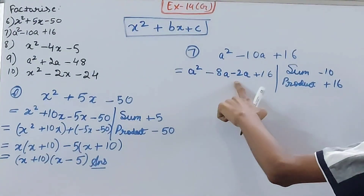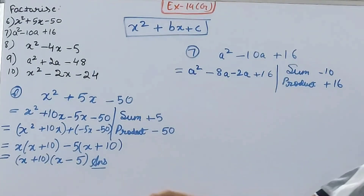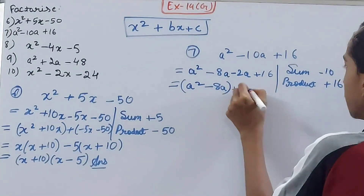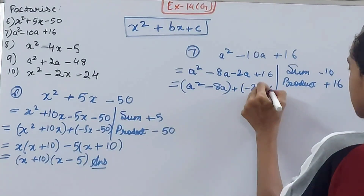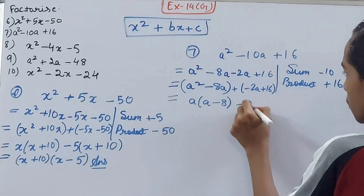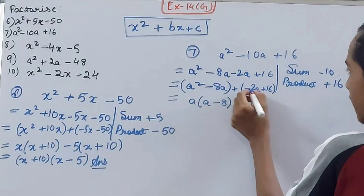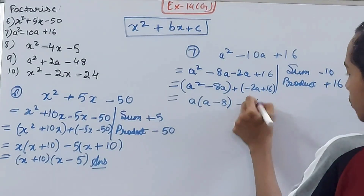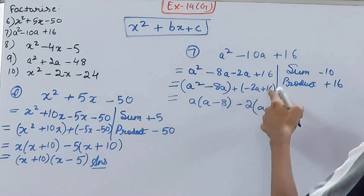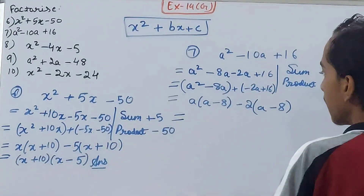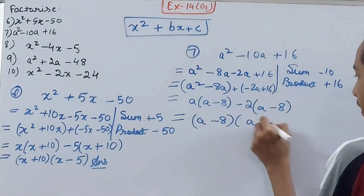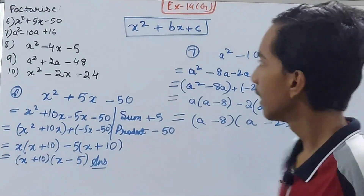So minus 8 into minus 2 is plus 16, and minus 8 minus 2 is minus 10. Now group: a squared minus 8a in one group, and minus 2a plus 16 in another group. Take a common to get a minus 8, and take minus 2 common to get a minus 8. Taking a minus 8 common from both groups gives the answer: a minus 8 into a minus 2.